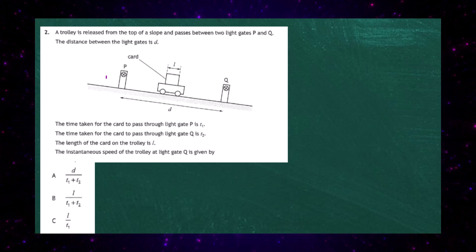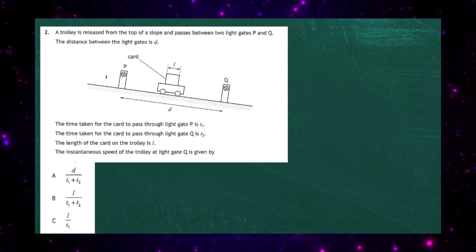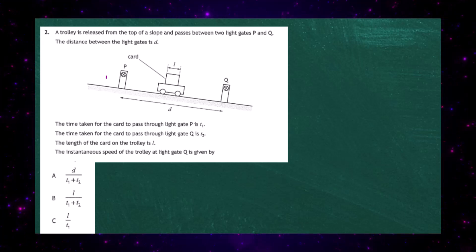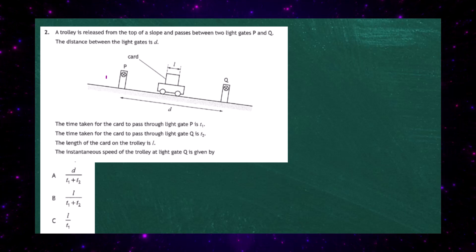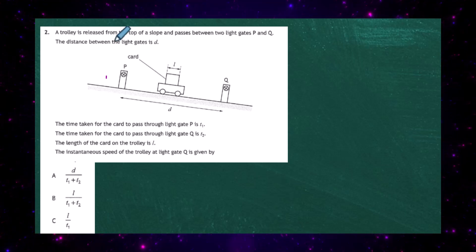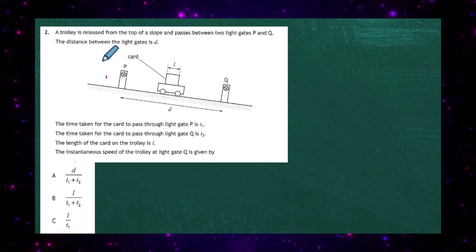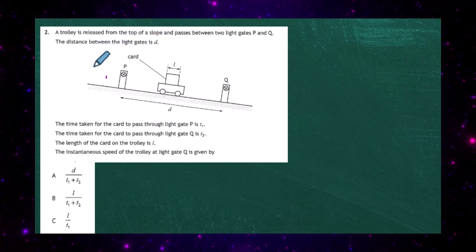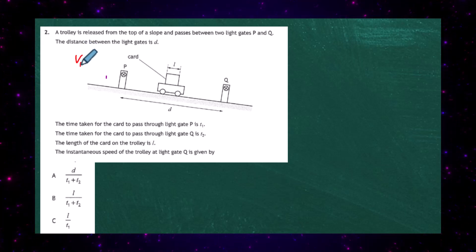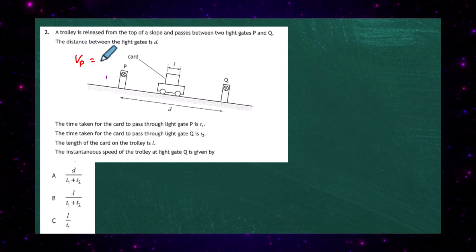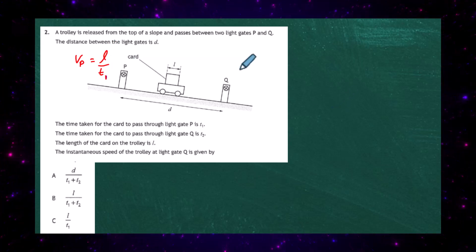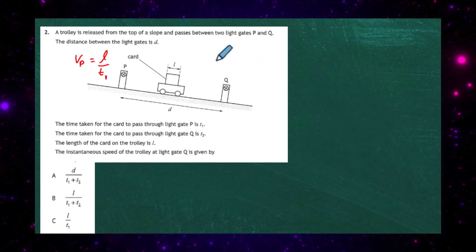We're asked to find the instantaneous speed of the trolley at light gate Q. To find instantaneous speed, you time how long the length of the card takes to pass through the gate. At gate P, the length of the card is l and the time taken is t1, so the instantaneous velocity at P equals l divided by t1.